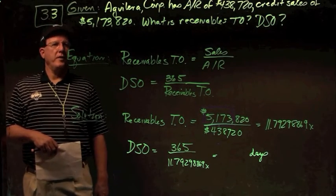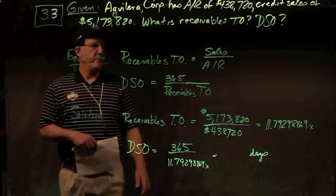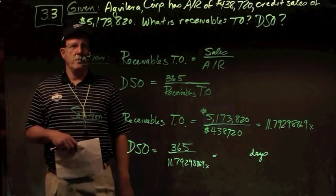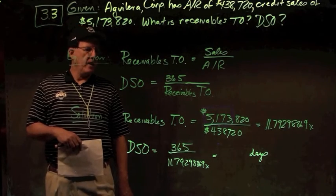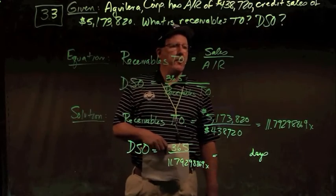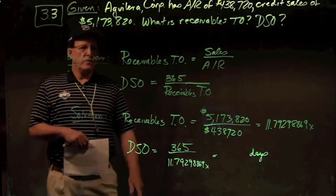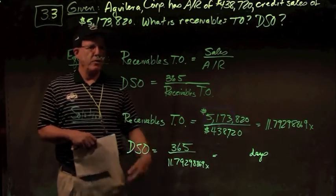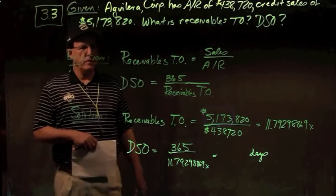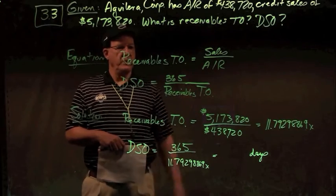In problem 3.3, we have Aguilera Corporation with accounts receivable of $438,720 and credit sales of $5,173,820. What's their receivable turnover and what are their day sales outstanding? The equation is: receivables turnover is sales over accounts receivable. In general, anything turnover is sales over anything — one exception being inventory turnover — but here it's sales over receivables.